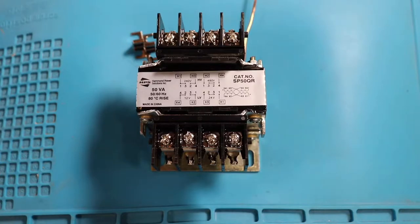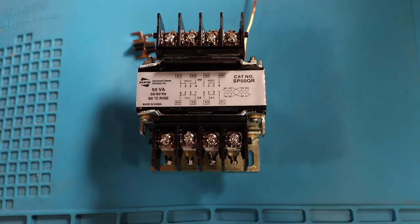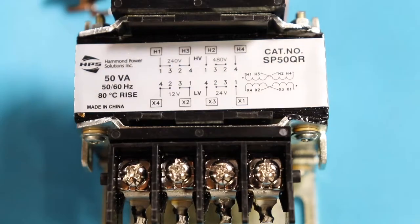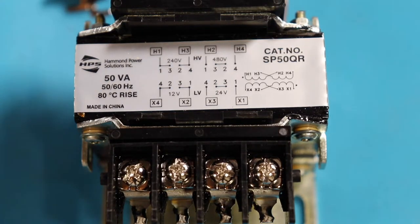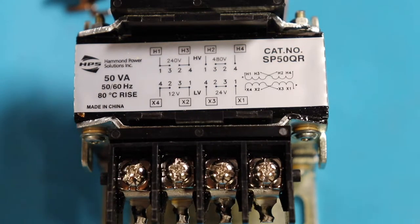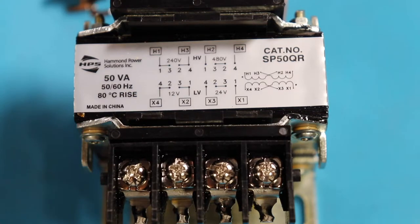Hey guys, today we're going to be looking at how to wire a control transformer with multiple input and output voltages. The transformer we have here is considered a step down transformer, which just means that the output voltage is lower than the input voltage.